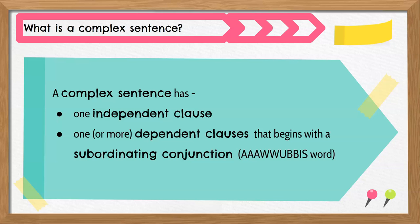The other part of a complex sentence is the dependent clause. This clause also has a subject and a verb. However, it begins with a subordinating conjunction. You probably know these as AWUBAS words.